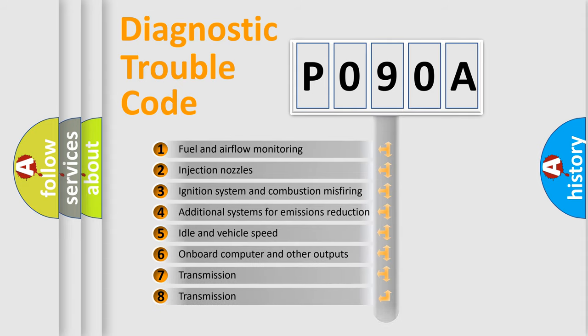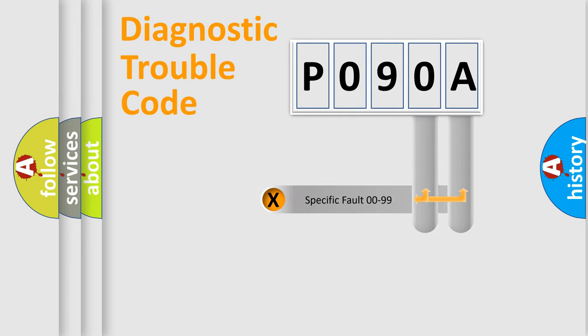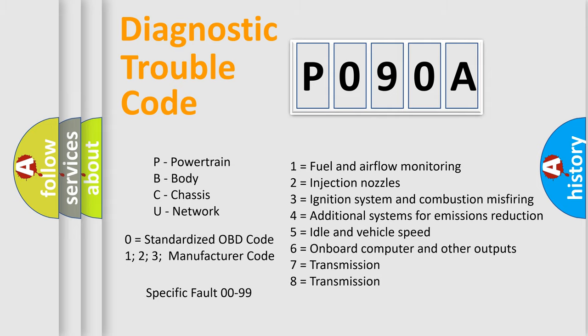The distribution shown is valid only for the standardized DTC code. Only the last two characters define the specific fault of the group. Let's not forget that such a division is valid only if the other character code is expressed by the number zero.